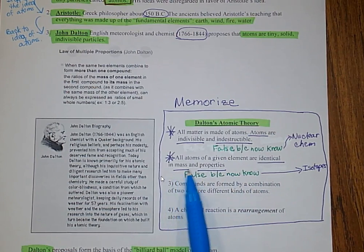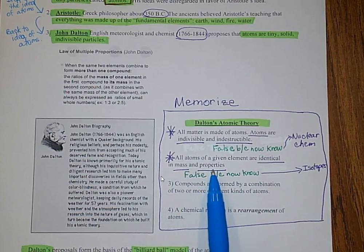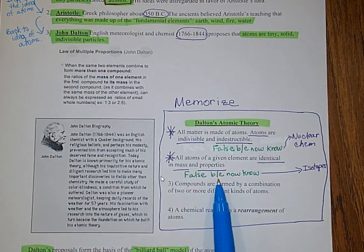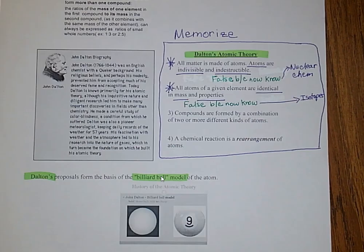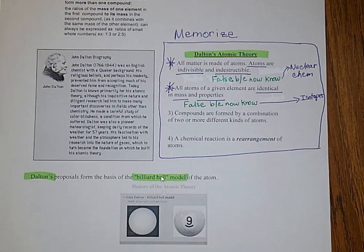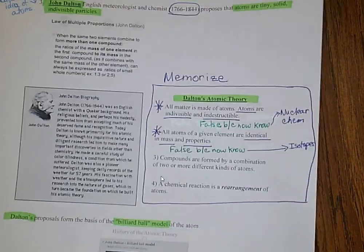The second postulate — that all atoms of a given element are identical in mass and properties — is also found to be false, because now we know there is something called isotopes, which we'll talk about later. The model that John Dalton proposed is called the billiard ball model — basically just a solid ball representing how an atom looks.